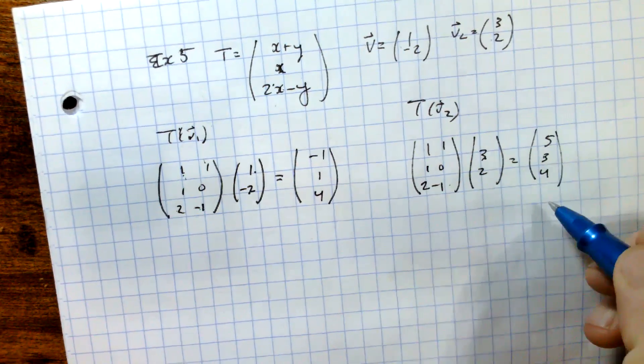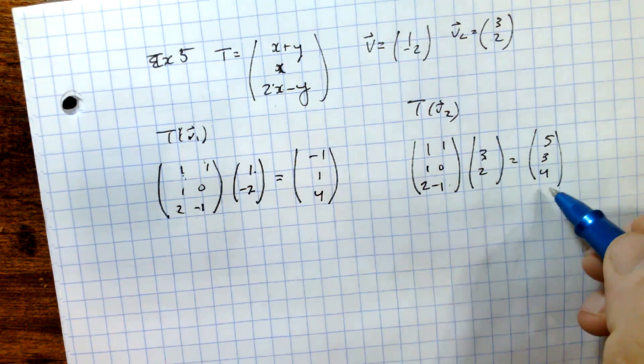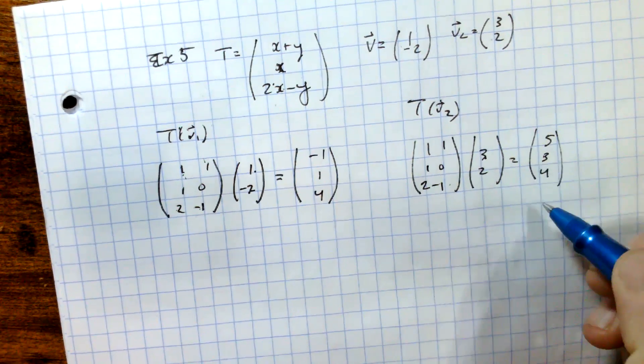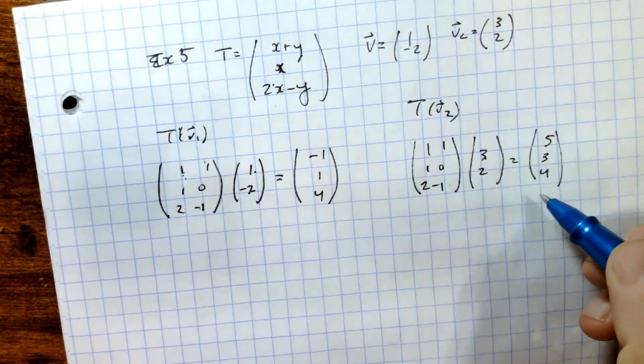Okay, so the transformation matrix for this one then gets mapped to 5, 3, 4. I hope that was helpful, and I'll see you in the next video.